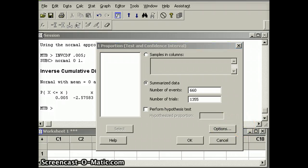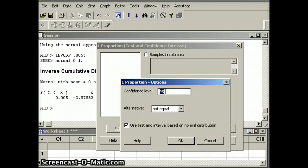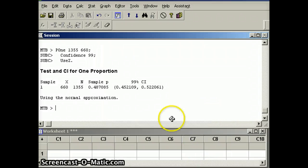Go to Options. And this time we do not want a 95% confidence interval, we want a 99% confidence interval. Make sure the button for the normal distribution is clicked because we're using a Z interval here. Saying OK, saying OK, and we get those numbers.